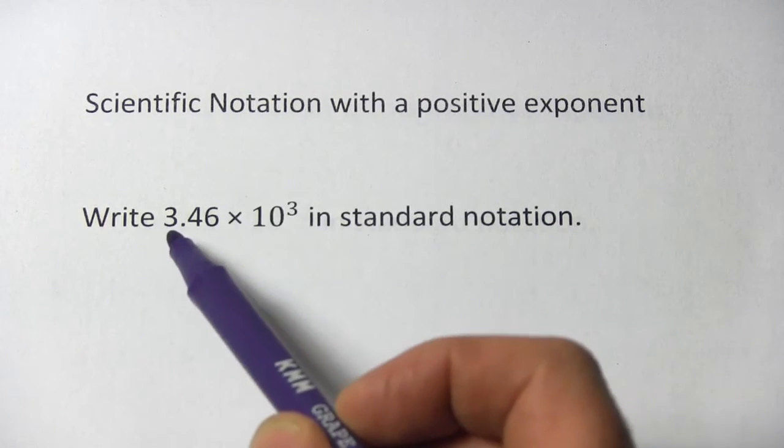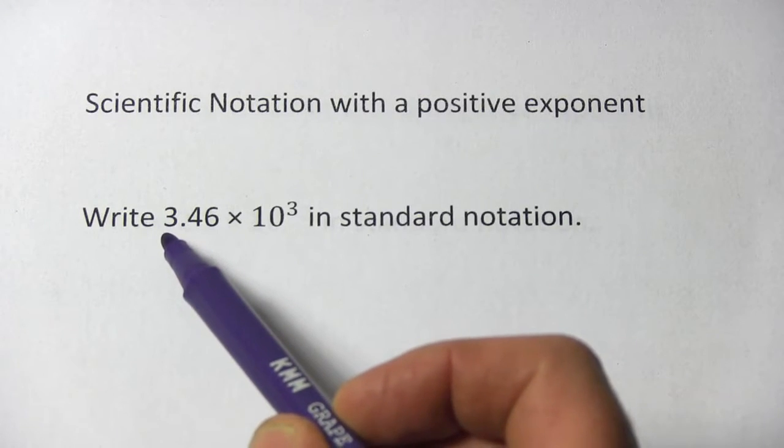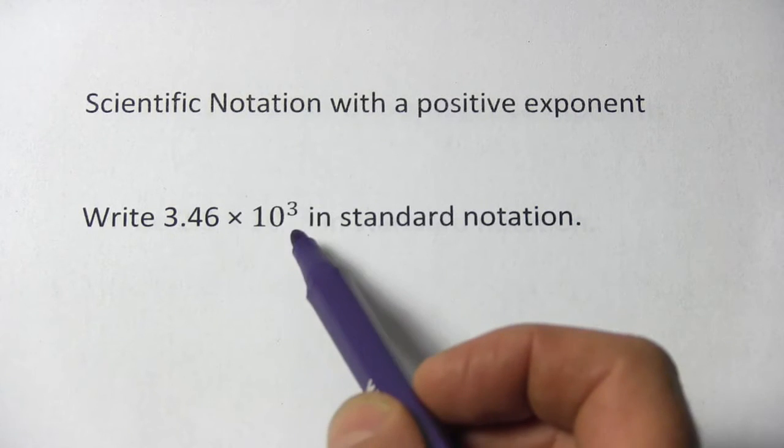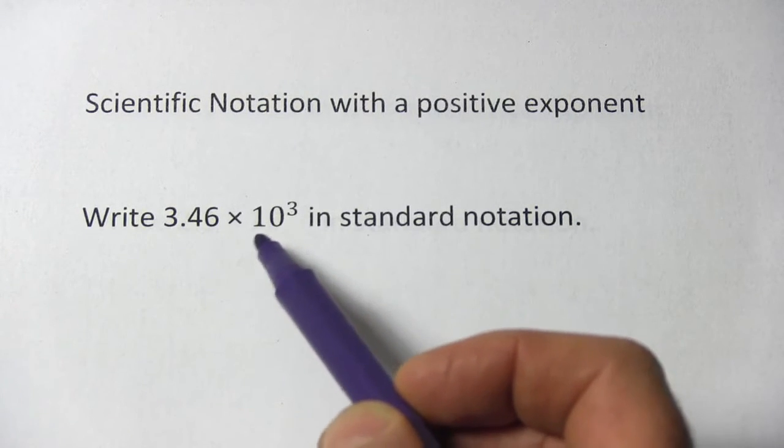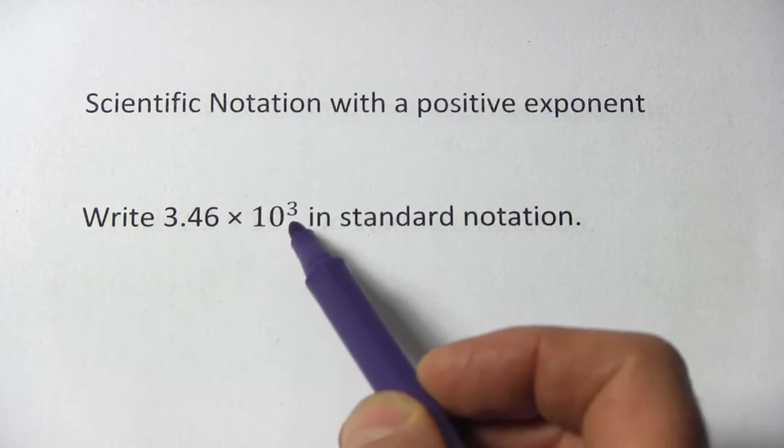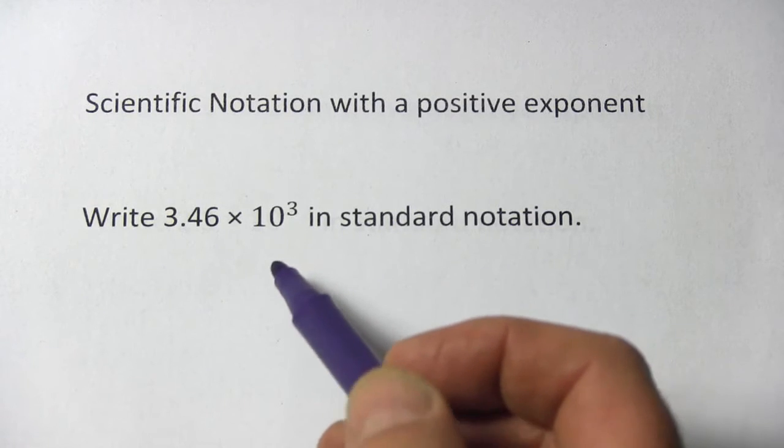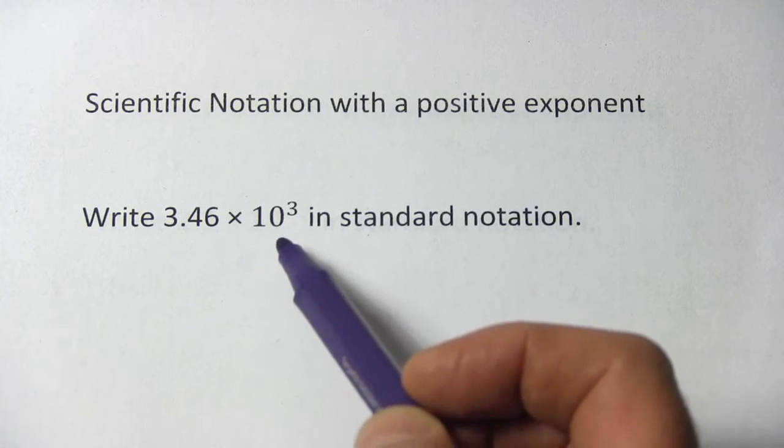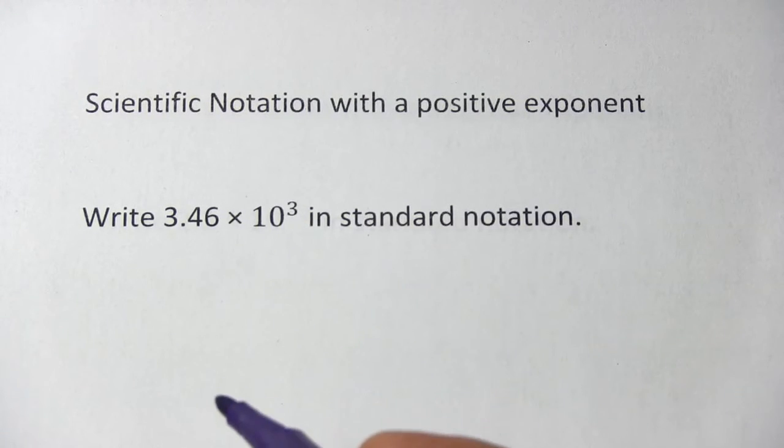The way they do it is they take a number that's between 1 and 10, so 3.46, that's between 1 and 10, and then they multiply it by either a power of 10 with a big exponent like 3, or a power of 10 with a really small exponent like negative 7 or something like that. And they can get really big and really small numbers and write it in this compact form.